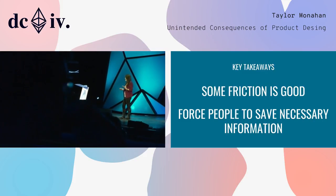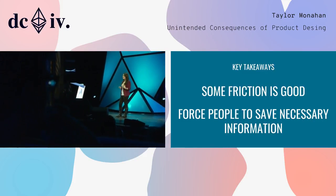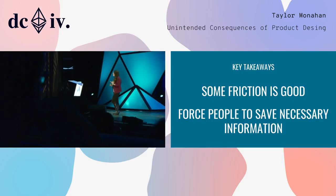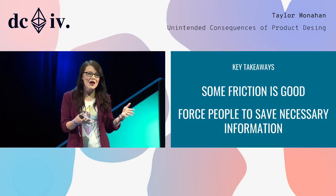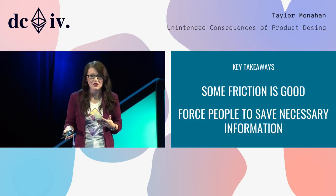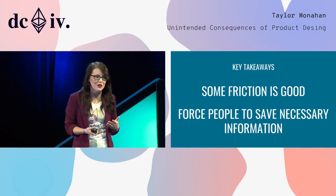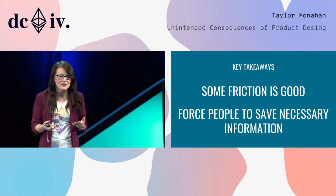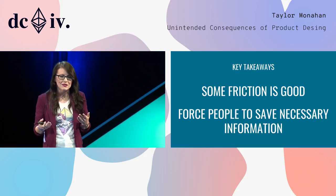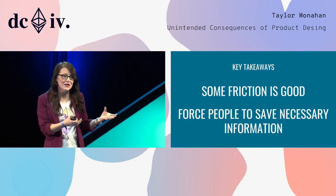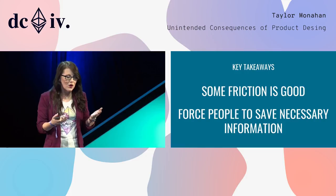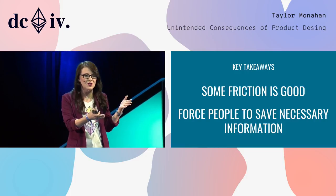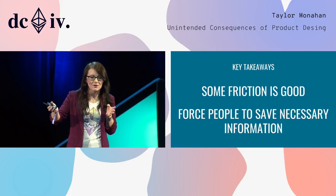So what can we learn from this? Sometimes friction is a good thing. You need to force people to save the necessary information, force them down the right path — and sometimes that path has extra steps and requires more clicks. But if the ultimate end goal is to get people into this ecosystem safely, with their keys backed up, maybe you do have to literally force them to do that, or at least guide them down the safe secure road.